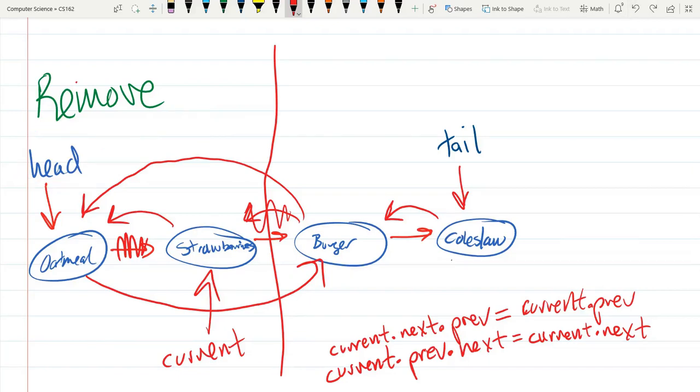But on the double linked list you have a choice. Should you start at head and then use the next or should you start at tail and use the previous?